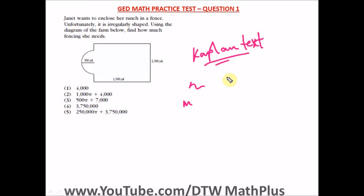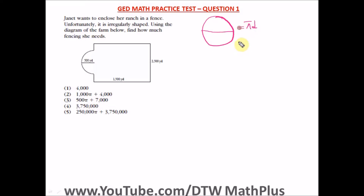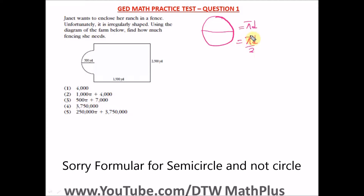Question 1 of the GED math practice test part two — the part where a calculator is not permitted. It says: Janet wants to enclose her ranch in a fence; unfortunately it is irregularly shaped. Using the diagram below, find how much fencing she needs. Finding how much fencing she needs means finding the perimeter of this irregular shape. We have a rectangle and a semicircle; the radius of the semicircle is 500 yards.